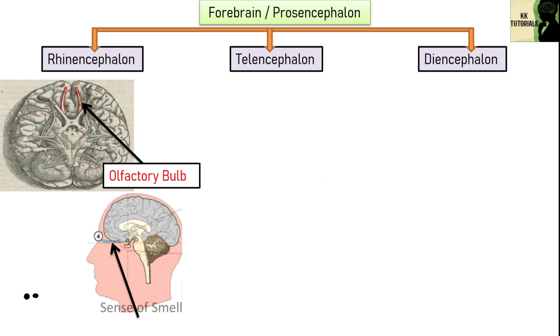The olfactory lobe is concerned with the sense of odor. This part of the brain receives sensation of smell. Olfaction begins when odorant molecules enter the nasal cavity through inhalation or by rising from the mouth. Those molecules interact with olfactory receptors.